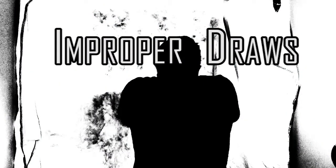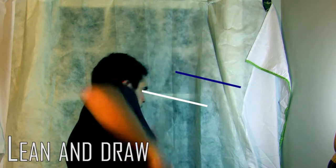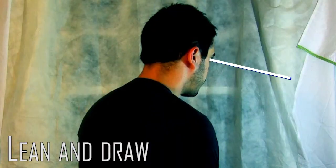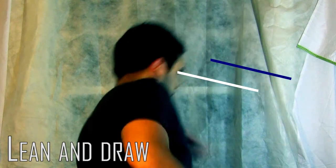Now for the improper draw. One of the most common improper draws is the lean and draw. It is essentially a horizontal movement from the hip and a simultaneous grab of the firearm.